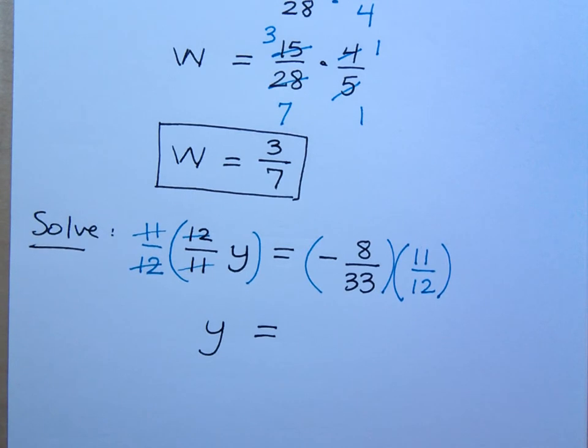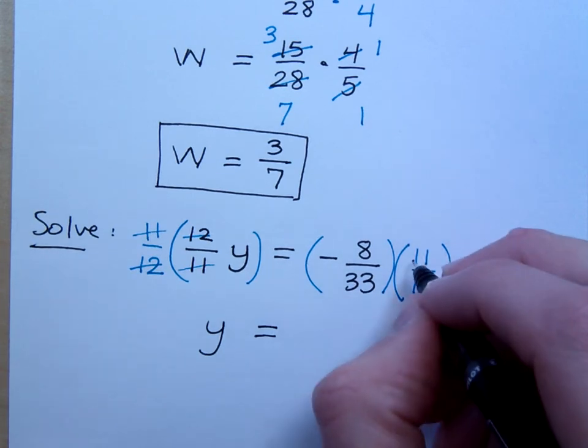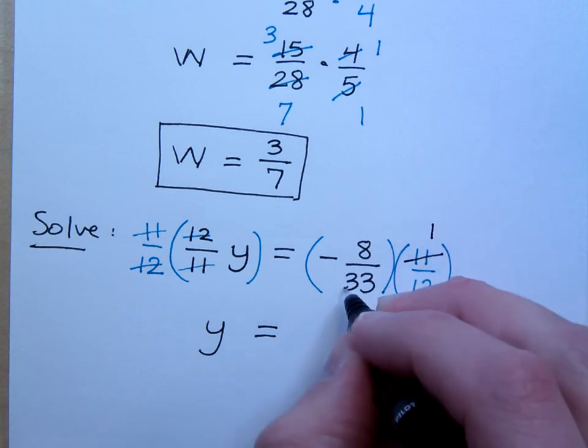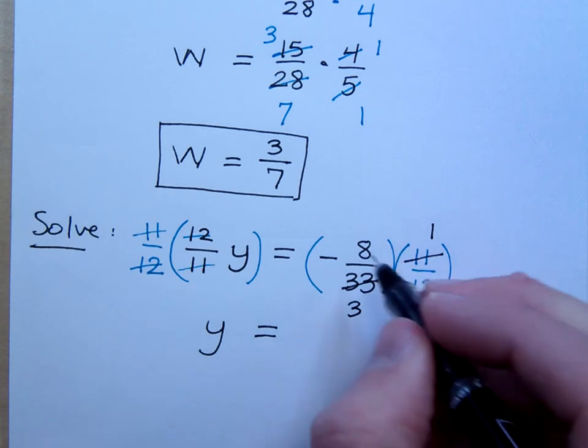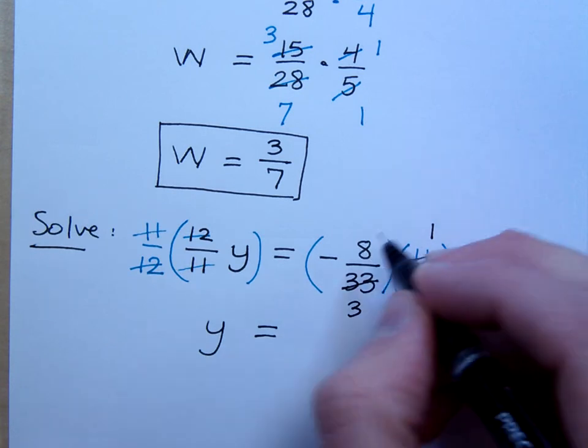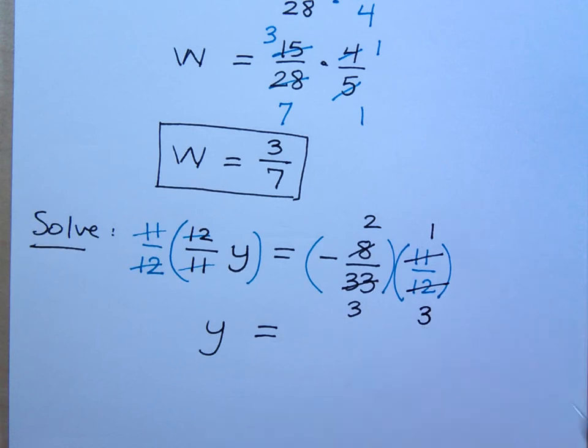How can I reduce this if possible? The 11 and 33 have a common factor of 11, so 11 goes in here once, in here three times. What else? 8 and 12 have a common factor of 4, so you get this twice, and this guy three times. Oh, I can cancel the threes, right?